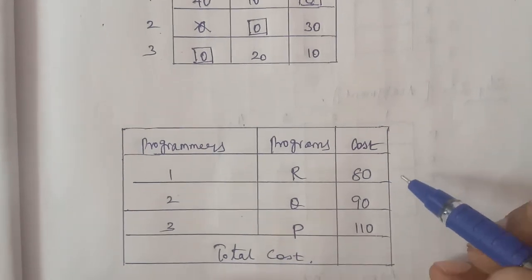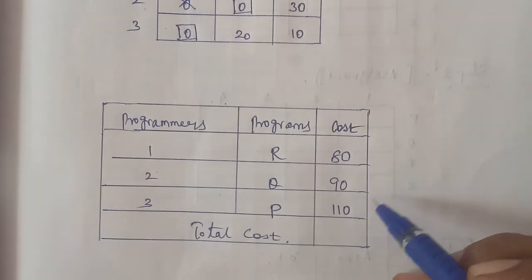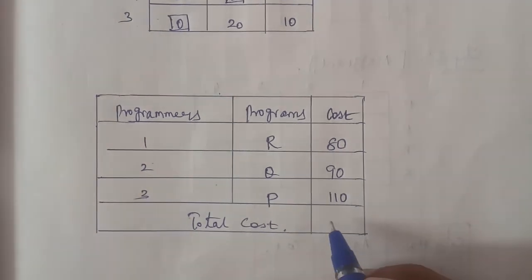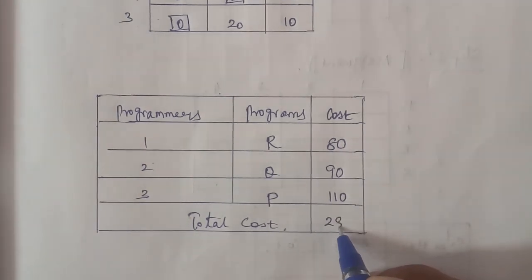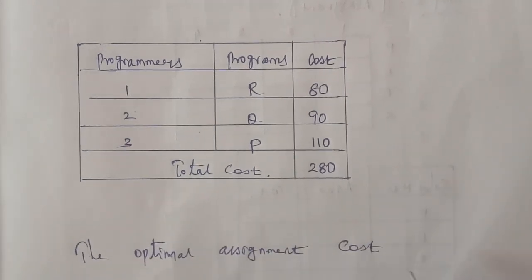Add all the values: 80 plus 90 plus 110. Therefore, the answer is the optimal assignment cost rupees 280. So you will learn. Thank you students.